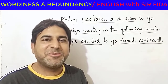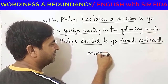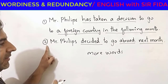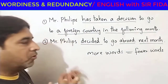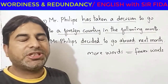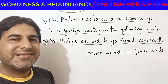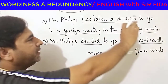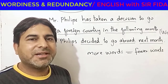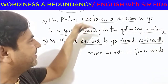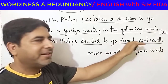What is the difference? The difference is that more words have been used in sentence one, but in sentence two, fewer words are used. This style in which we use more words to say something is called wordiness. So which of these two sentences is wordy? Of course sentence one is wordy — more words have been used to convey one idea. The second sentence conveys the same idea with very few words: Mr. Phillips decided to go abroad next month.